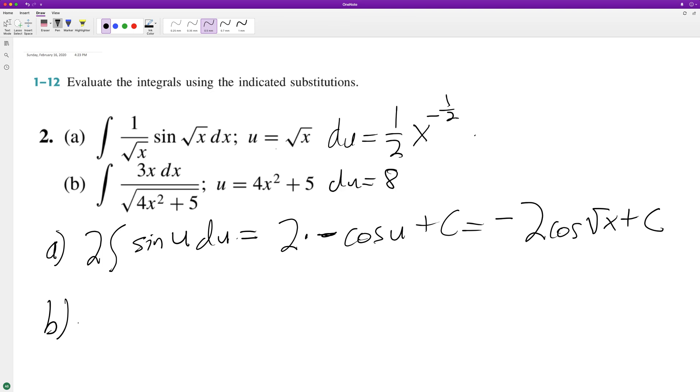We're left with 3 here, so how do we get that working? To get du equal to dx, we need to multiply by 3/8. So multiply by 3/8, put that in front.